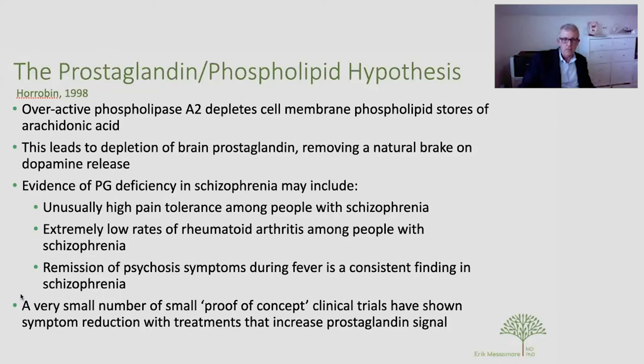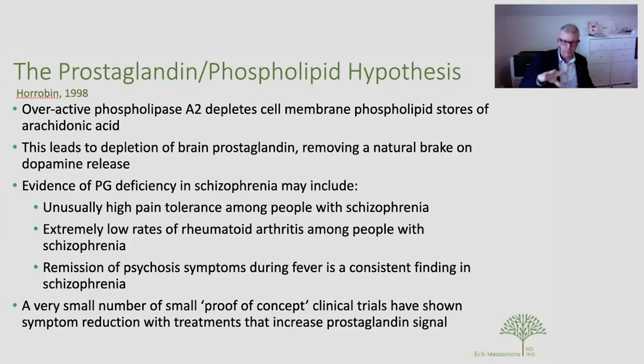All of this leads to something called the prostaglandin hypothesis, championed by a researcher named David Horobin who passed away in the early 2000s. The prostaglandin hypothesis posits — and this is supported by evidence — that the phospholipase enzyme, whose job it is to release arachidonic acid from cell membranes, is overactive in people with schizophrenia, or at least a subset of that group. With overactive phospholipase, you deplete the cell membrane stores of arachidonic acid. When you need it to make prostaglandins, it's not there — and thus you remove the brake from excessive dopamine release, setting the stage for psychosis.